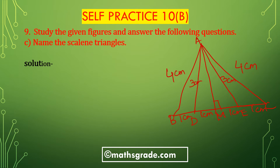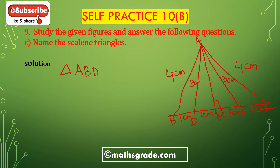Name the scalene triangles. The triangle in which all three sides are different is a scalene triangle. In triangle ABD: AB is 4cm, AD is 3cm, and BD is 1cm — 4, 3, and 1cm, so all three sides are different, so triangle ABD is a scalene triangle. In triangle AEC also: AC is 4cm, AE is 3cm, and EC is 1cm — all three sides are different, so triangle AEC is also a scalene triangle. Both ABD and AEC are scalene triangles.